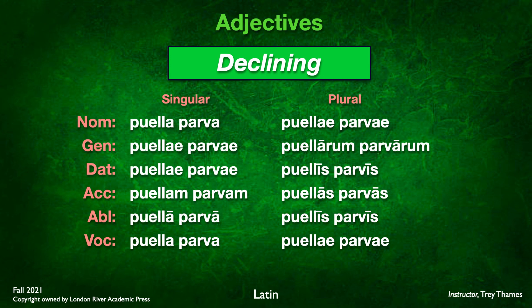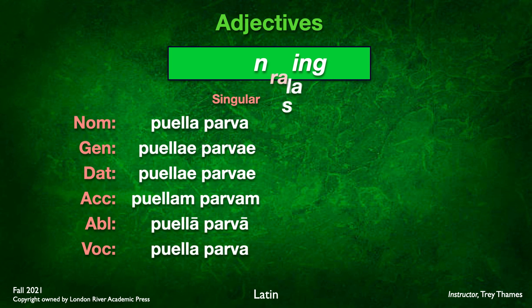Just like the noun, you take the stem and add the endings. So we end up with puella parva, puelae parvae, puelae parvae, puellam parvam, puella parva, etc. That is how we decline it — add those same endings to the adjective stem parva- just as you do to the noun stem.